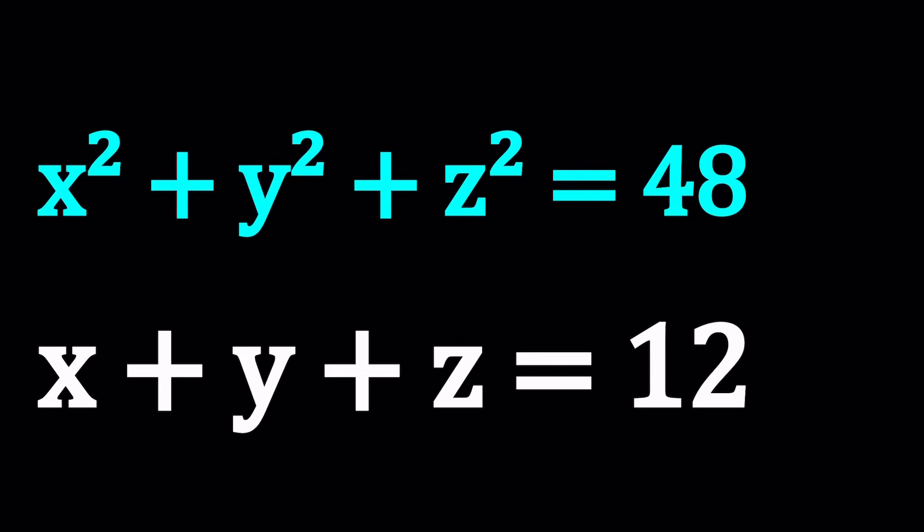Hello everyone. In this video, we're going to be solving a system of equations. We have three variables and two equations. So we have x squared plus y squared plus z squared equals 48, and x plus y plus z equals 12.